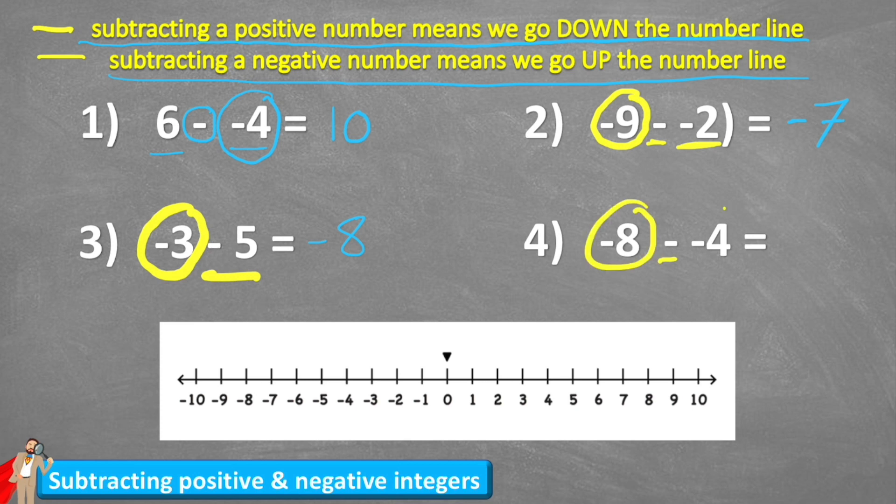Last one. Negative eight subtract negative four. So let's find negative eight on the number line. There it is. And if I subtract a negative I actually come up the number line. One, two, three, four. And I land on negative four. So negative eight subtract a negative four is negative four.